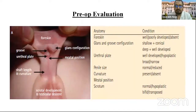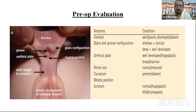In pre-operative evaluation, we have to look for the foreskin — whether it is well developed, poorly developed, or absent. Glans groove configuration — whether it is shallow, conical, deep, or well developed. Look for the urethral plate — well developed, hyperplastic, broad, or narrow. The penile size — if it is reduced or normal, curvature if present or absent, and location of the meatus. Lastly, the scrotum — normal, hypoplastic, bifid, or transposed.